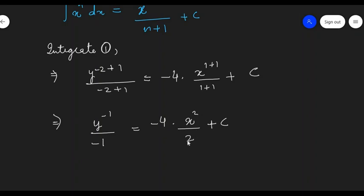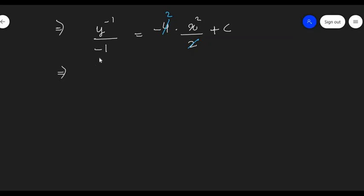Now, this 4 and 2 will cancel and we will be left with 2. So, I will get -1/y = -2x^2 + C.